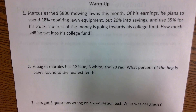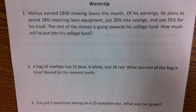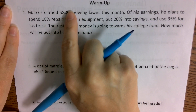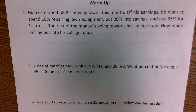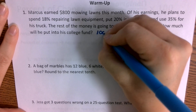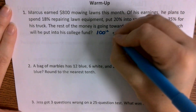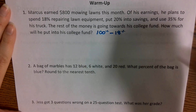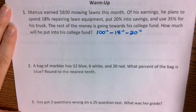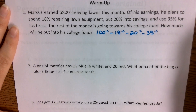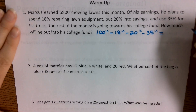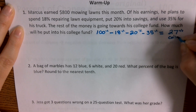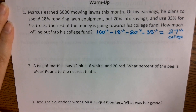How do I find the percentage that is his college fund? Add the multiple — and then subtract it from 100. So all of your percentages together should equal 100%. I'm just trying to find out what the percent value is going to be. I know that 100% is his money. I'm going to take 18% out for lawn repair, 20% away for savings, 35% away for his truck. What is remaining is going to be 27%. So 27% is going to go into his college fund.